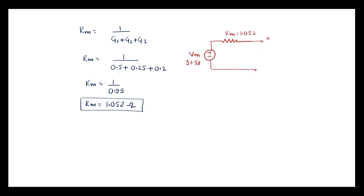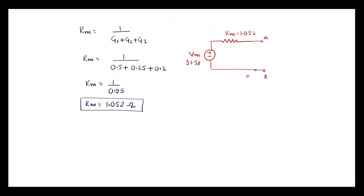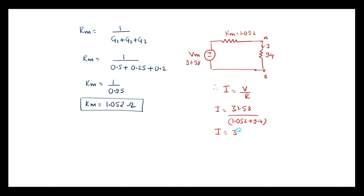This is terminal A and terminal B. As we removed the resistor from this branch, we reconnect the 9.4 ohm resistor across terminals A and B. Assuming current I flows in this branch, by applying KVL: I = V / R = 31.58 / (1.052 + 9.4) = 31.58 / 10.452 = 3.02 A.